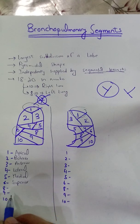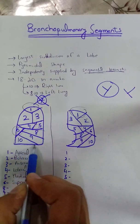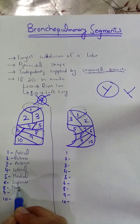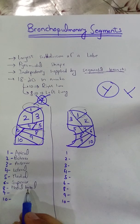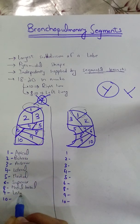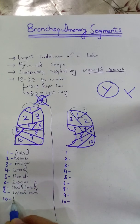Number 8 will be medial basal. As it is on the basal side, it will be medial basal. Nine will be lateral basal, and 10 will be posterior basal.